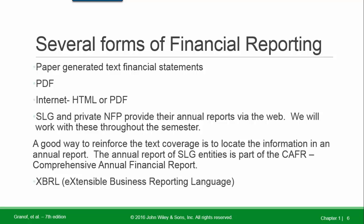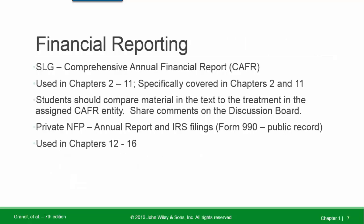The annual report for a state and local government entity is part of the CAFR — Comprehensive Annual Financial Report. We use the state and local government CAFR in chapters 2 through 11, specifically covered in chapters 2 and 11. Students should compare material in the text to the treatment in the assigned CAFR entity. Assignments will be made shortly; share comments on the discussion board.